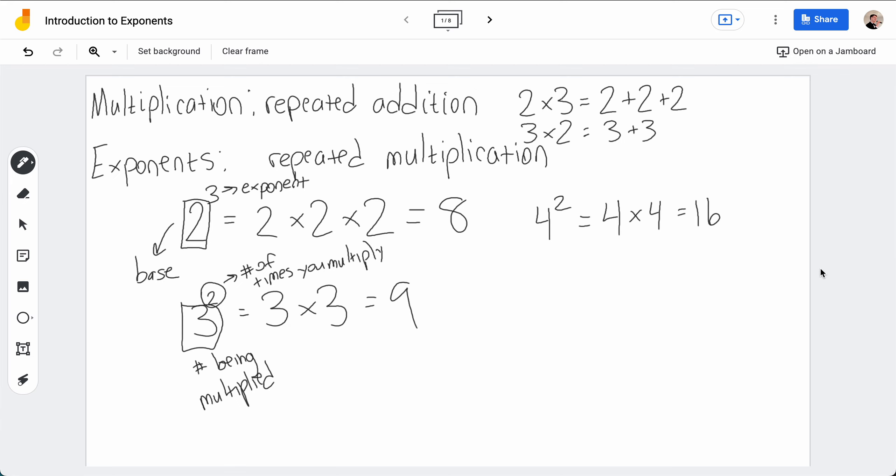Another way you can read this, instead of 4 to the second power, is you can read this as 4 squared. The reason for this is because 4 squared, which is 4 times 4, this is the same thing as if you think about a square, and I say it has side lengths of 4, then what's the area? Well, the area is 16. The area is 4 times 4, or 4 squared.